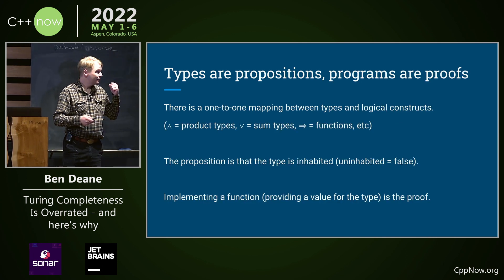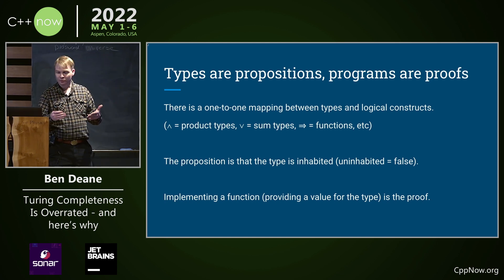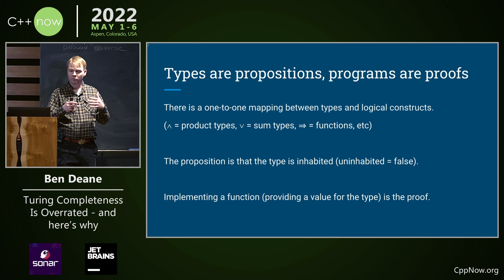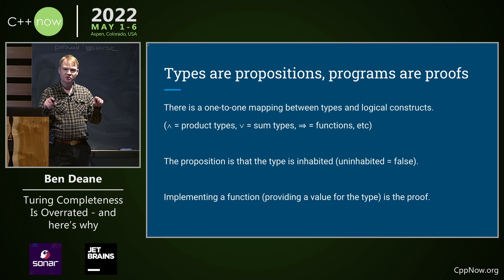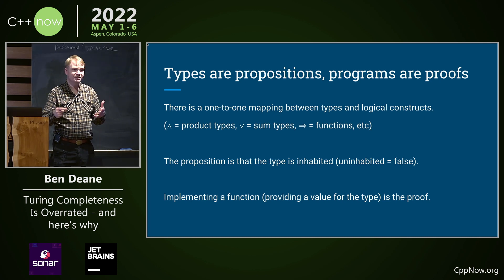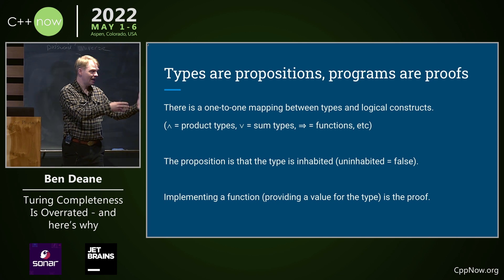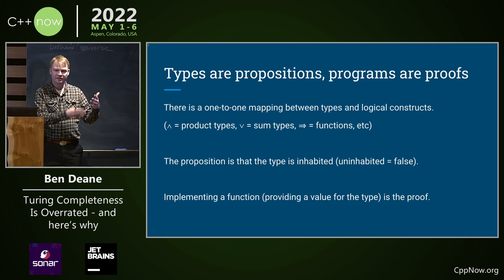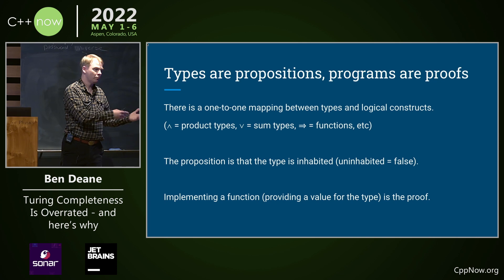This is the foundation of functional programming languages today. When you write a program in a functional language, you are establishing a proposition. When you write a function, the function signature is the implication proposition — the proposition that there is a value that will inhabit this type. When you write the function body, you are proving the proposition.